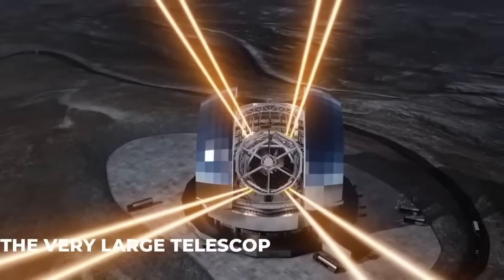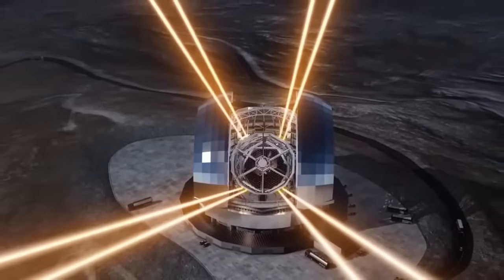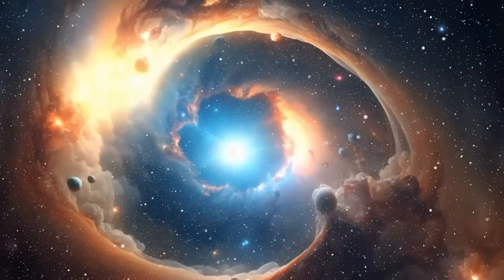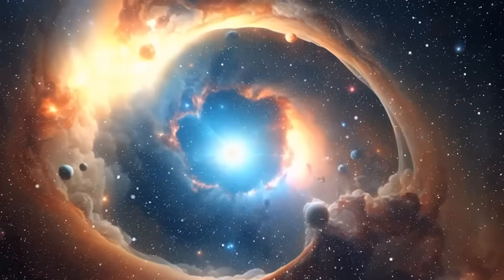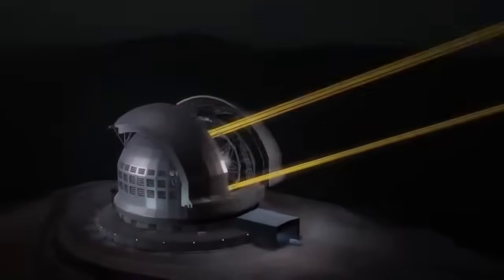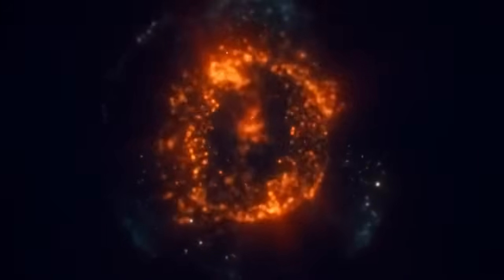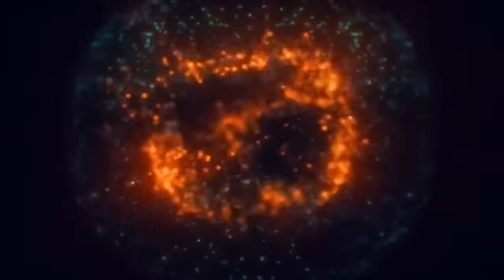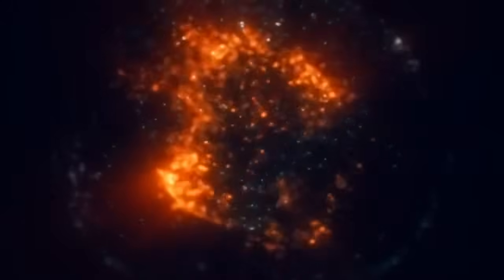The Very Large Telescope, VLT, in Chile, one of the most advanced observatories in the world, managed to capture a series of images that would prove crucial in understanding the star's behavior. The VLT images revealed that Betelgeuse's appearance was far from symmetric. The star, which had once appeared as a uniform disk, now had a distinctly lopsided shape. It was as if a cosmic hand had reached out and squashed the star, leaving it misshapen and distorted. But the asymmetry was just the beginning.